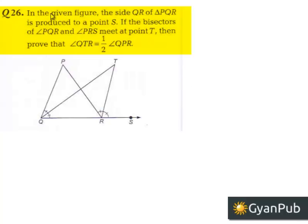Moving on to the 26th question. In the given figure, the side QR of triangle PQR is produced to a point S. If the bisectors of angle PQR and angle PRS meet at point T, then prove that angle QTR is equal to half times angle QPR.